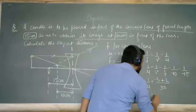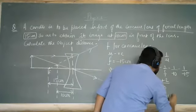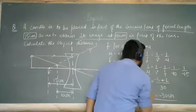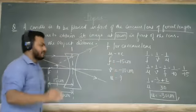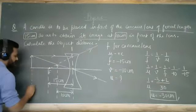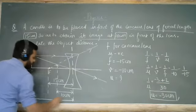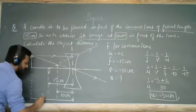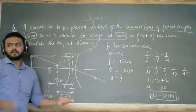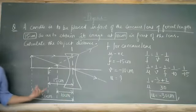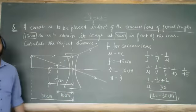After solving, we get u is equal to minus 30 cm. This means that in this particular question, the object distance from the optical center is 30 cm. If the object is placed 30 cm away, then the image will be formed at 10 cm.